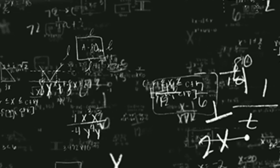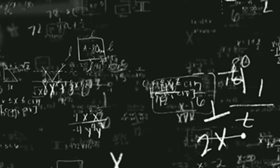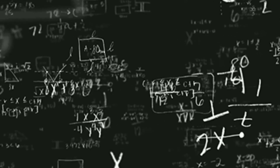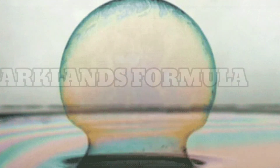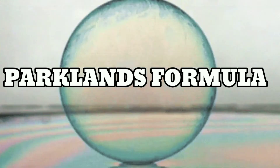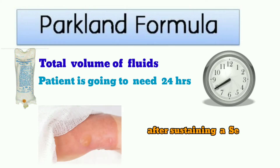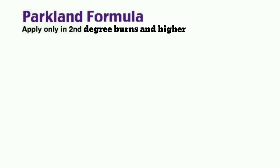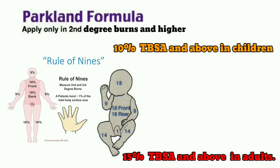Fluids needed can be calculated from a standard formula. There are many fluid calculation formulas, but we will look at three commonly used ones: the Parkland's formula, Evans formula, and the Brooke Army formula. The Parkland's formula is a calculation used to determine the total volume of fluids a patient needs in the 24 hours after sustaining a severe burn — 10% TBSA and above in children, or 15% and above in adults, for second degree burns and higher.